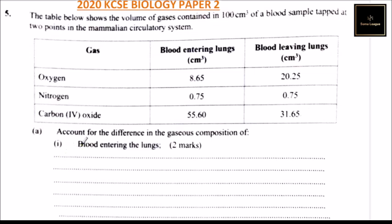Part A of the question: account for the difference in gaseous composition. Roman numeral one — blood entering the lungs. We can say blood entering the lungs has lower concentration of oxygen, because the oxygen has already been used in the body during respiration, but higher concentration of carbon dioxide which is to be removed in the lungs.